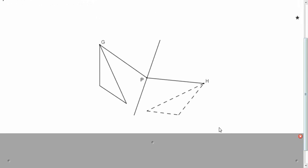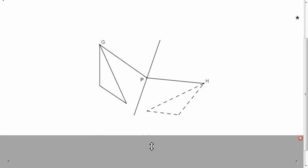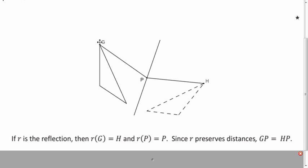Well, you know that when you reflect G over the line, you get H. And since P is on the line, it stays invariant. So when you reflect P, it's just P again. And so we have these two segments, GP and HP, and they're reflections of one another. So since distance is preserved, you know that those distances are the same.